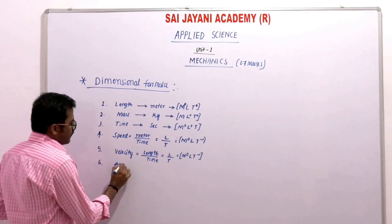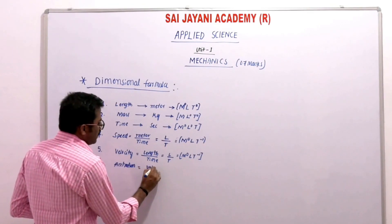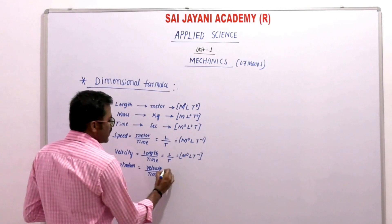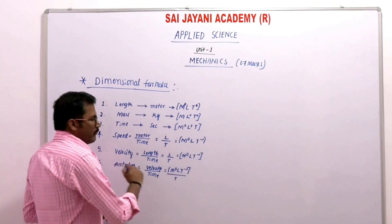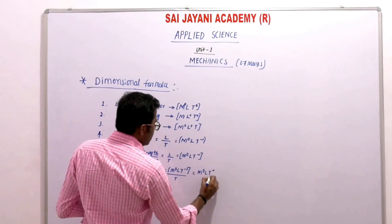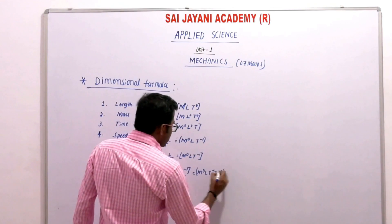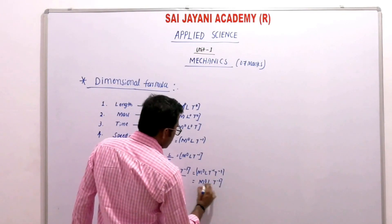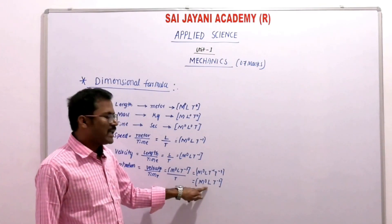Next is acceleration. Acceleration is the ratio of velocity by time. Velocity already has the dimensional formula M⁰ L T⁻¹. Dividing by time T gives M⁰ L T⁻¹ divided by T, which means T to the power minus 1 plus minus 1 equals T⁻². So the dimensional formula for acceleration is M⁰ L T⁻².